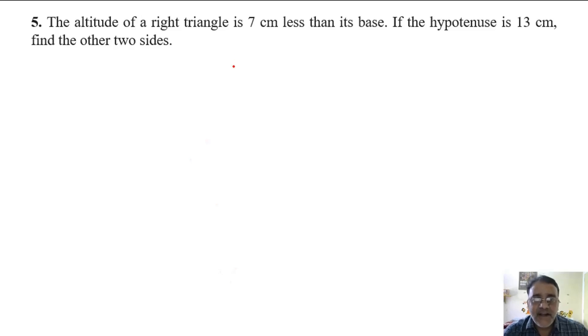The altitude of a right triangle is 7 cm less than its base. If we take the base as x, then altitude will be x minus 7. And hypotenuse is 13 cm. Find the other two sides.